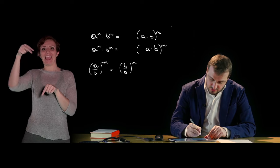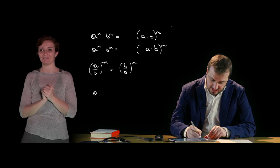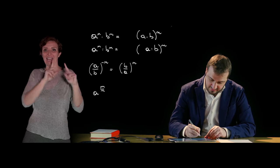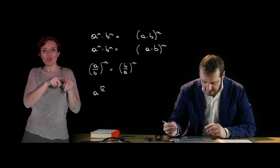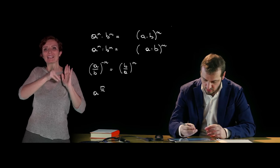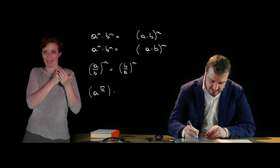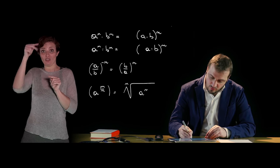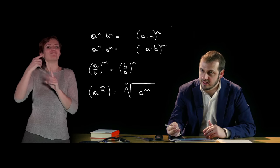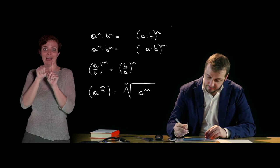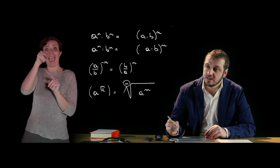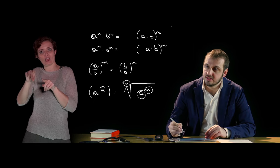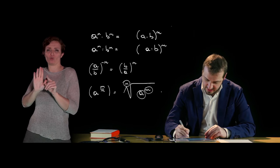Se invece abbiamo a che fare con una potenza con un esponente razionale, quindi A elevato ad m fratto n, ricordo che il numero razionale è un rapporto fra due numeri interi, quindi m e n, questa potenza è uguale alla radice ennesima di A alla m. Qui ancora un richiamo ai radicali, che vedremo nella prossima lezione, in cui n si chiama indice del radicale, A è il radicando ed m è l'esponente del radicando.